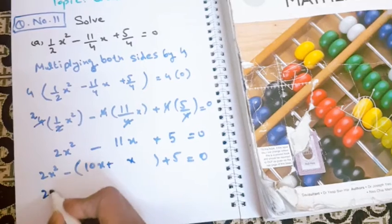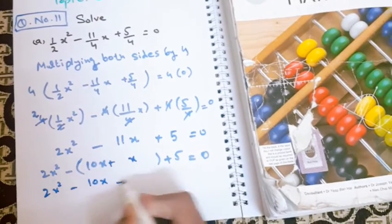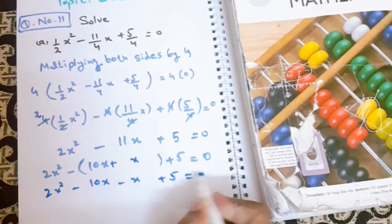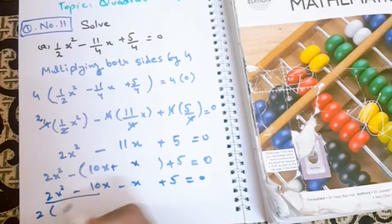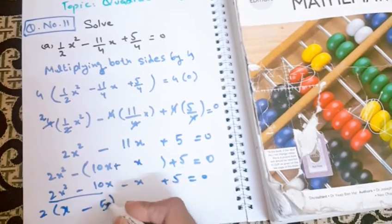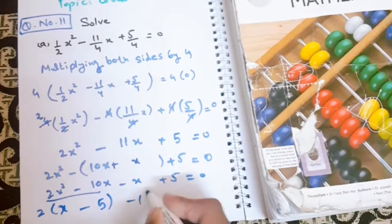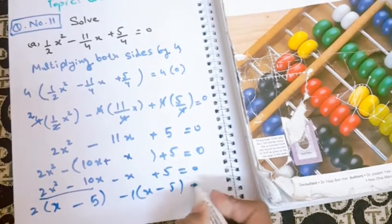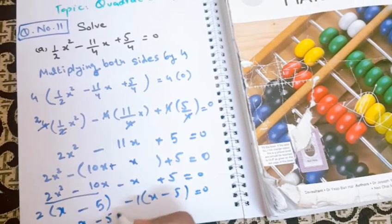This becomes 2x square minus 11x plus 5 equals 0. Factorizing: 2x square minus 10x minus x plus 5. You know how to perform factorization. x is common here, x minus 5.